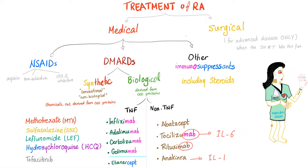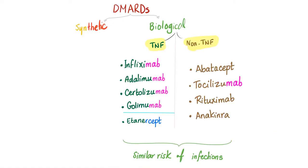Other immunosuppressants include steroids, cyclosporin, cyclophosphamide, azathioprine, and mycophenolate mofetil. DMARDs are synthetic or biological; the biological are TNF or non-TNF. The TNFs are listed here, the non-TNFs are here.